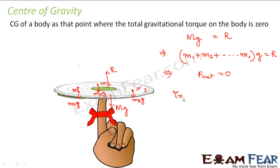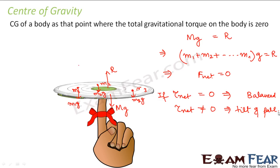Now if the net torque is equal to zero, the disc will be balanced. But if the net torque is not equal to zero, it will tilt and fall down — it will not be in equilibrium. So this net torque actually balances the gravitational force, and therefore this torque is known as gravitational torque. The net torque comes from the contribution of each of the particles; it comes from the weight of each particle, and each weight M1g, M2g, M3g arises because of the gravity of the earth. That is why this torque is known as the gravitational torque.